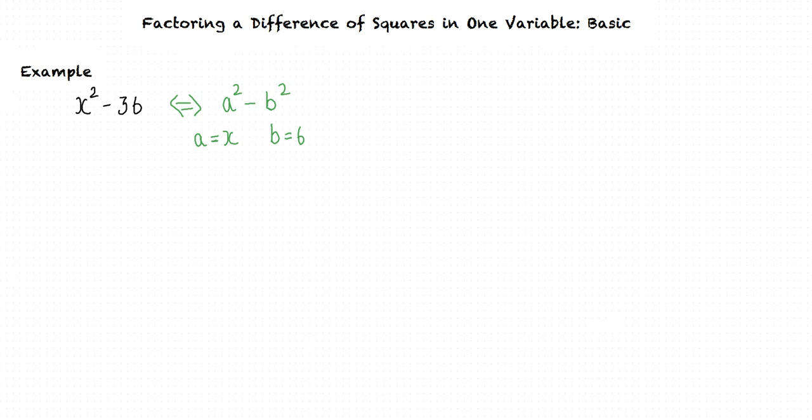The final step is to apply the identity and complete factoring the difference of squares. According to the identity, we have a squared minus b squared equals (a + b) times (a - b).